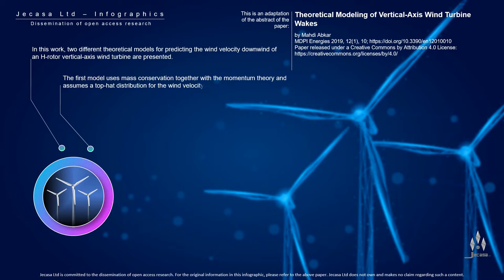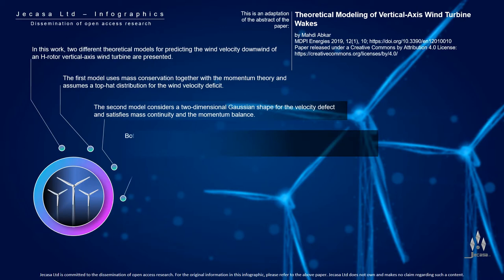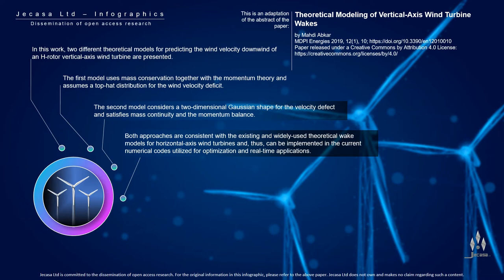The second model considers a two-dimensional Gaussian shape for the velocity defect and satisfies mass continuity in the momentum balance. Both approaches are consistent with the existing and widely used theoretical wake models for horizontal axis wind turbines, and thus can be implemented in the current numerical codes utilized for optimization and real-time applications.